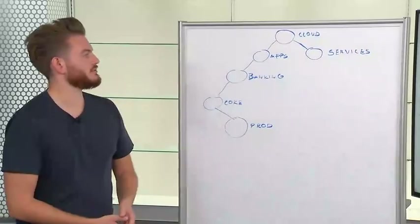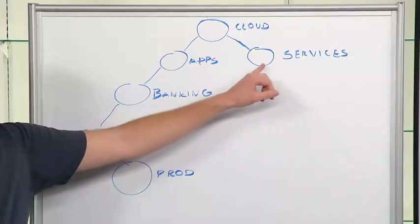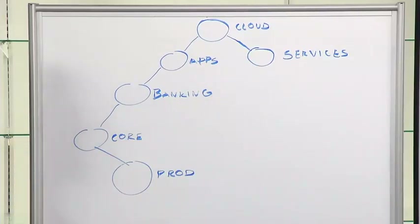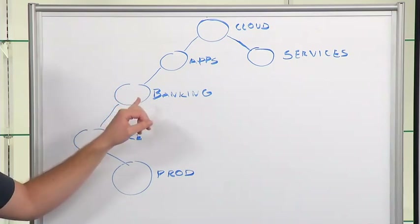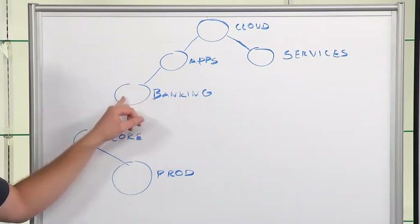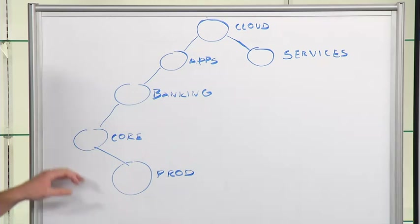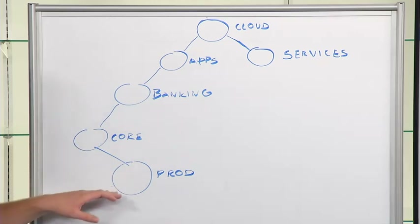We've split down to applications and services within the cloud. Then under applications, we've got one group of applications called banking and a sub-application called core. Under that, we have the lifecycle of prod.